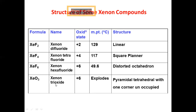Xenon trioxide (XeO₃): oxidation state is plus six, melting point — it explodes, and the structure is pyramidal tetrahedron with one corner unoccupied.